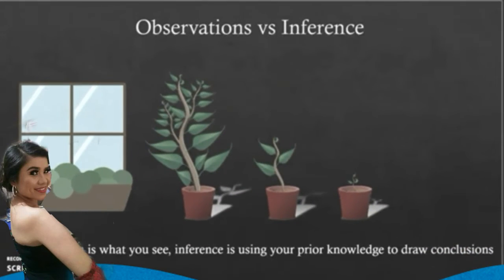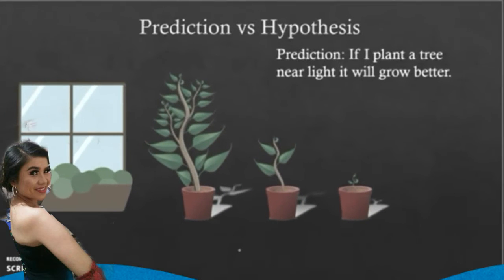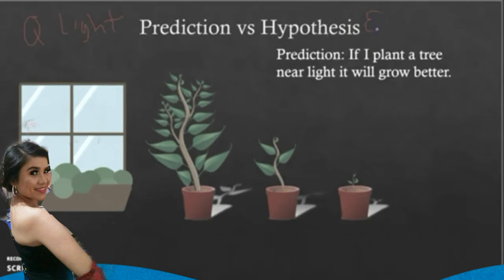Now let's proceed to the important terms that you also need to learn. An observation is directly something that you see, taste, touch, hear, or smell — it is your five senses. An inference is when you use prior knowledge to draw conclusions. A prediction is making a statement about something that will occur. A hypothesis is an explanation that you can test.